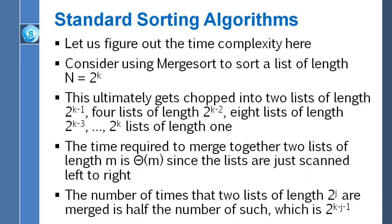The number of times that two lists of length two to the j have to be merged together in merge sort is half the number of such. What do I mean? The wording here is a little awkward. So let's think about this. Going back a couple bullets. How many lists are there of length two to the j?